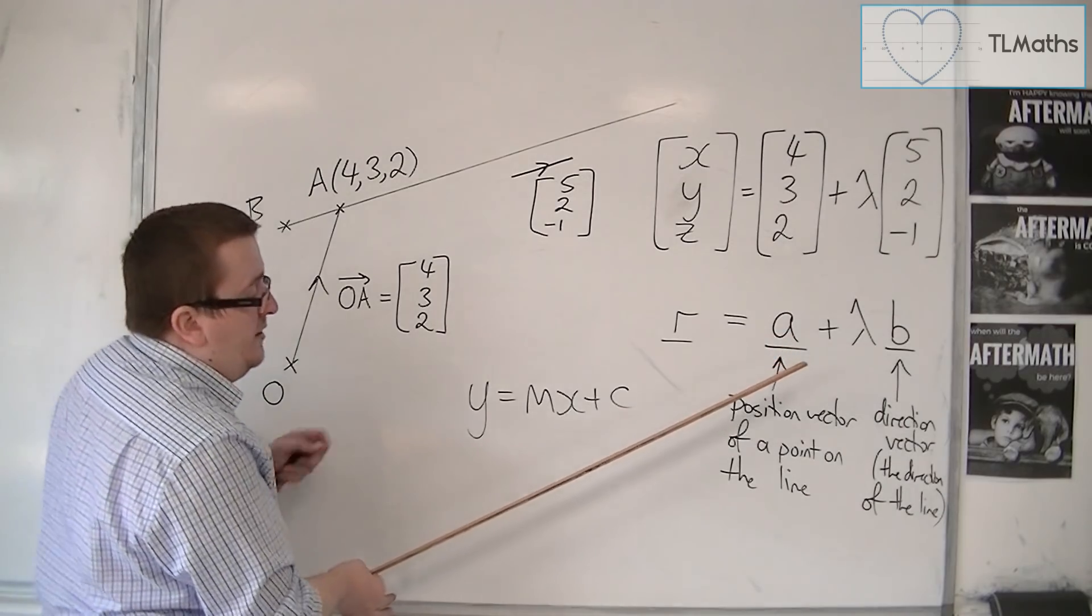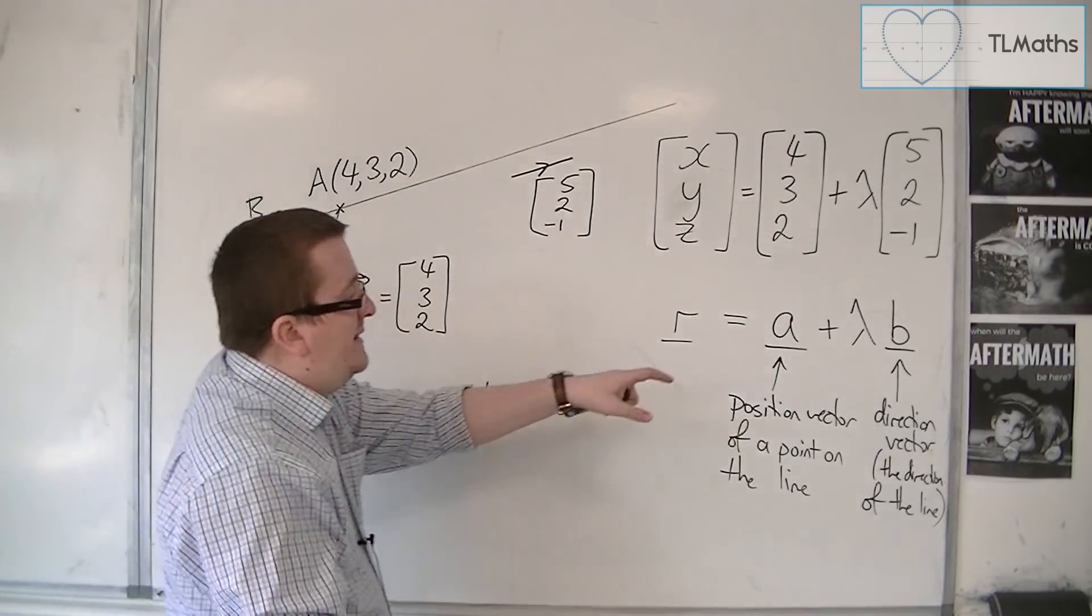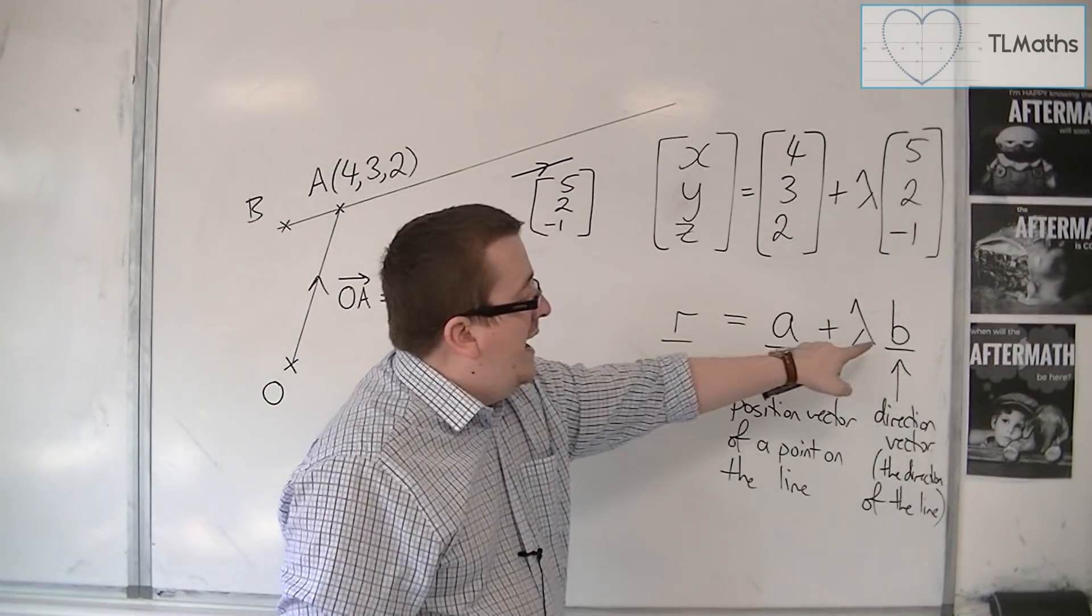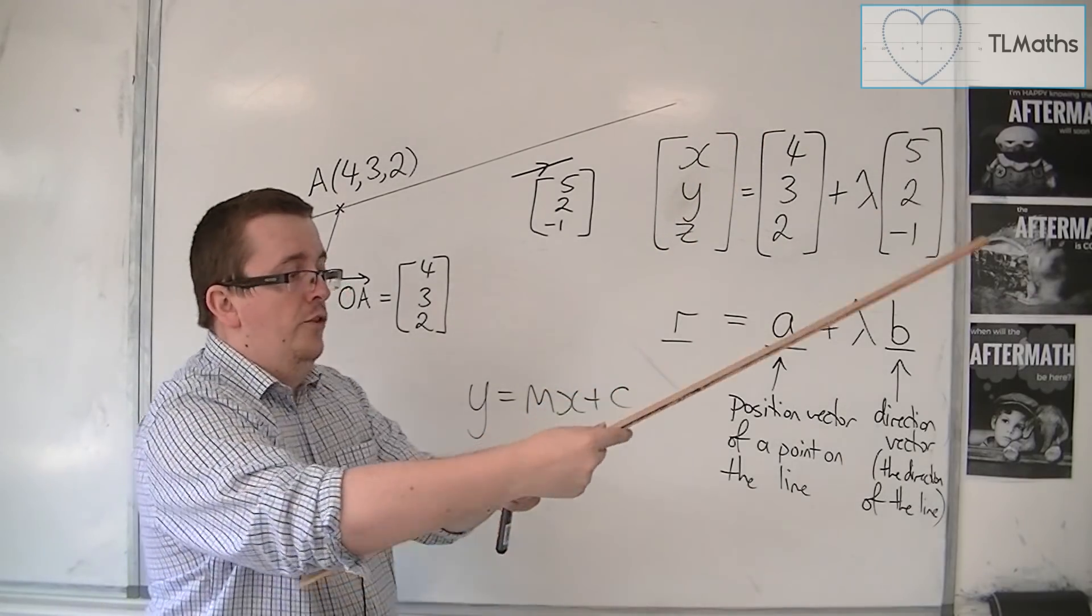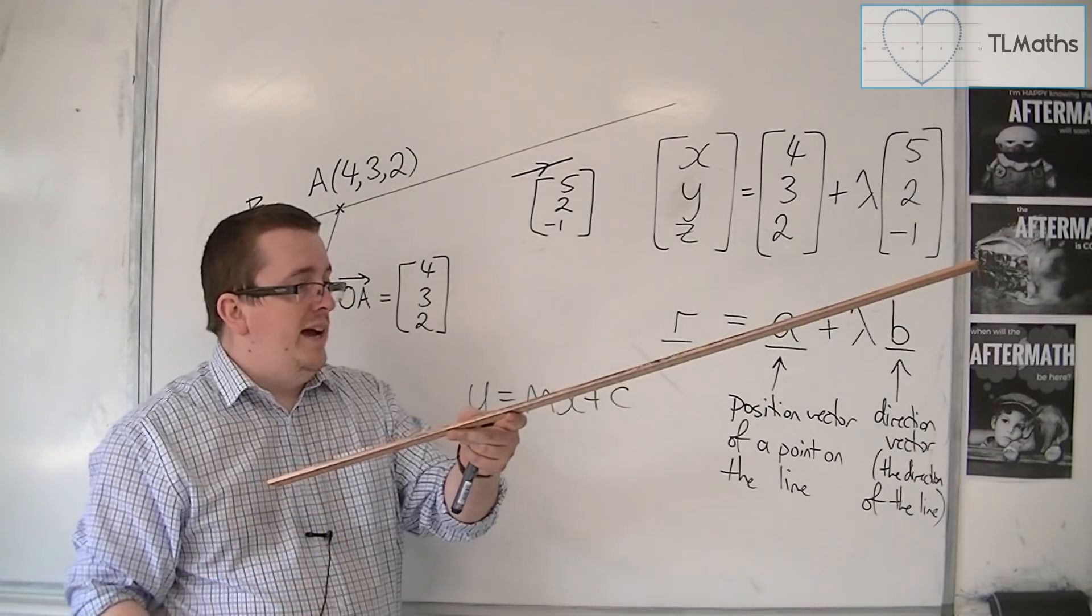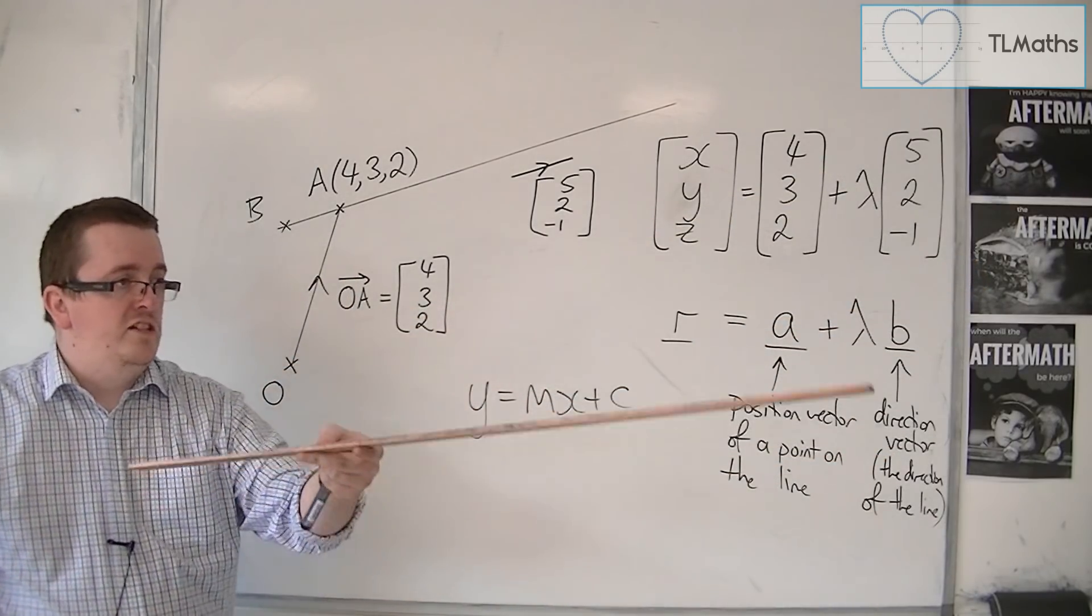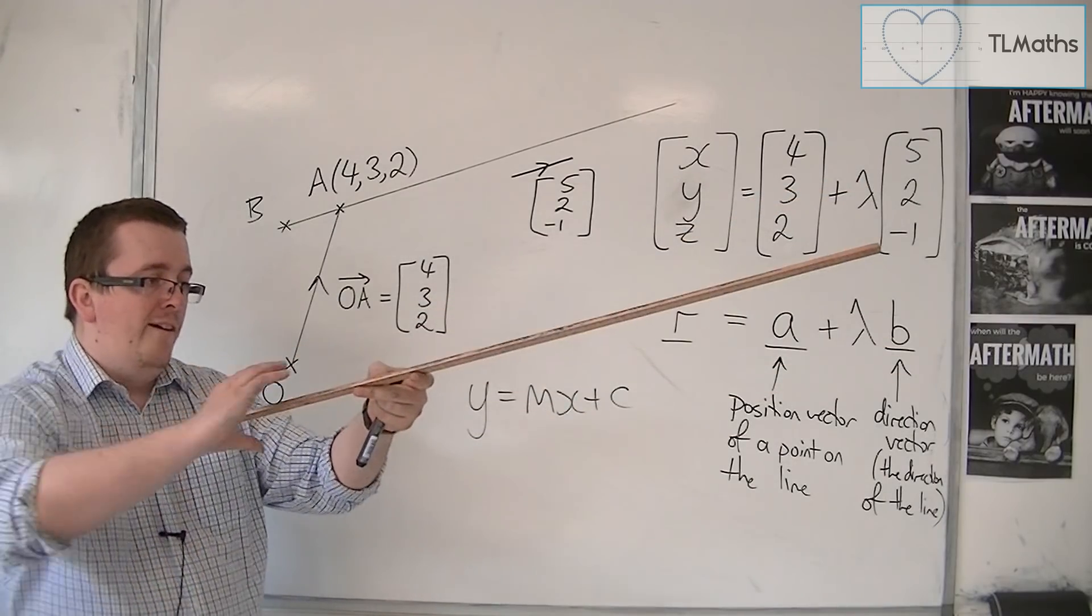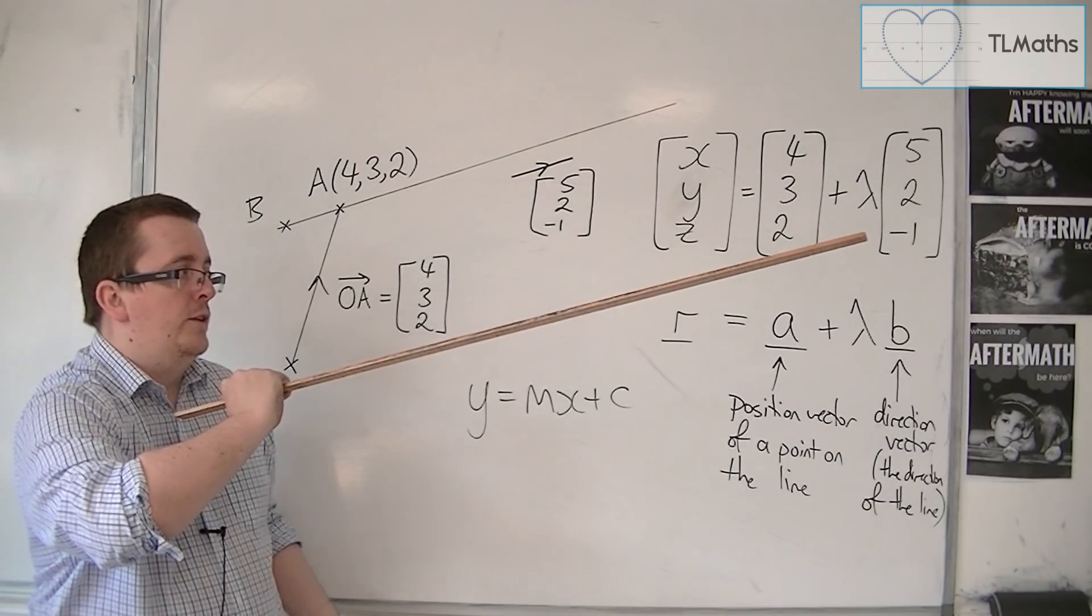So, the c is effectively your position, and the m is your direction. And in exactly the same way, we have B as being the direction vector, so that points the line in the correct direction, and then point A, I move that line about, all these lines are parallel, and the point A fixes it in place, fixes it in that particular position.